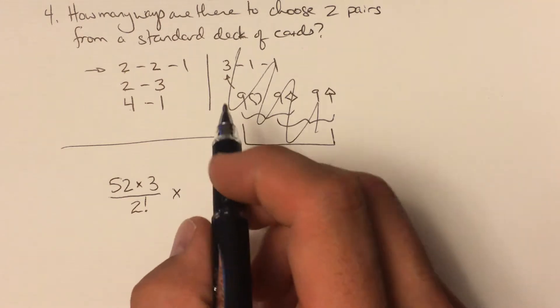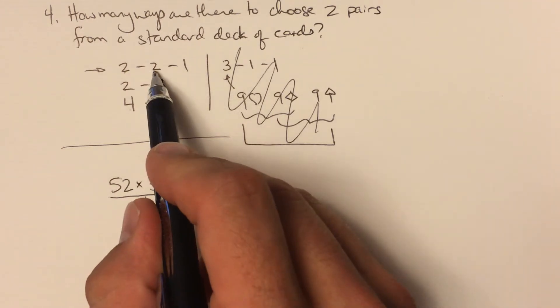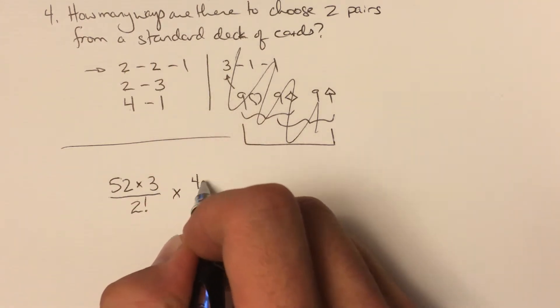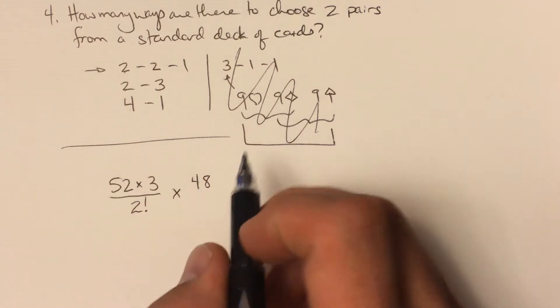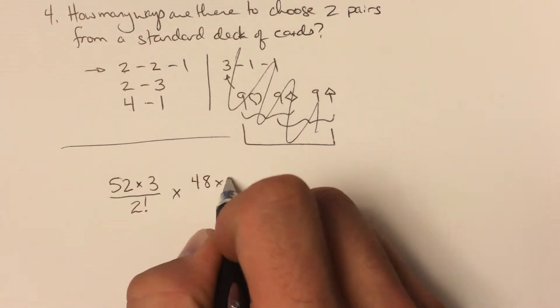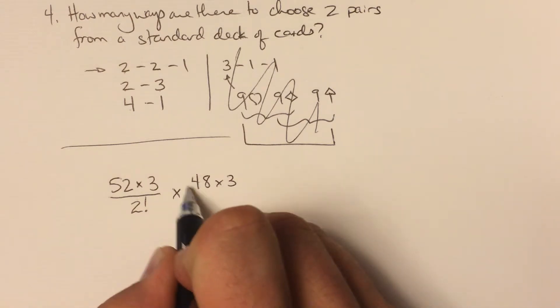And then I'm going to select another pair, and it will have a different value. In this case, there are 48 cards remaining that don't have the same value as my first card.